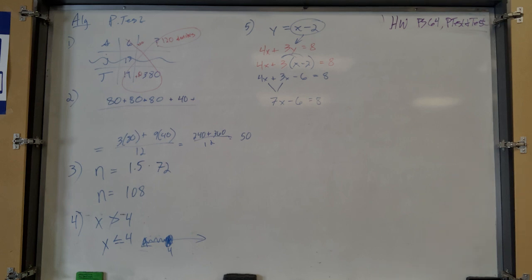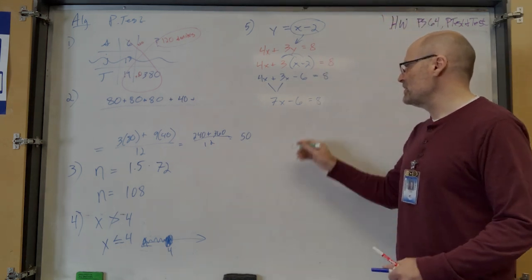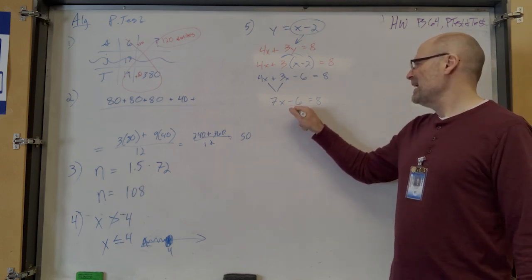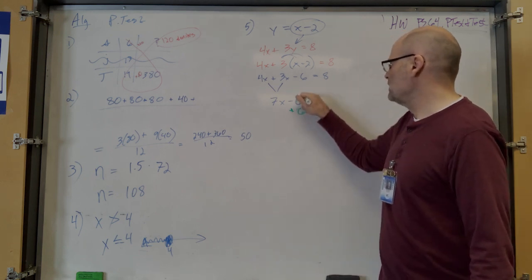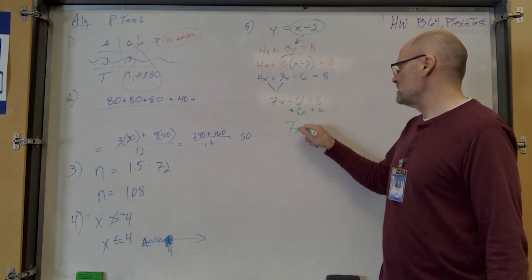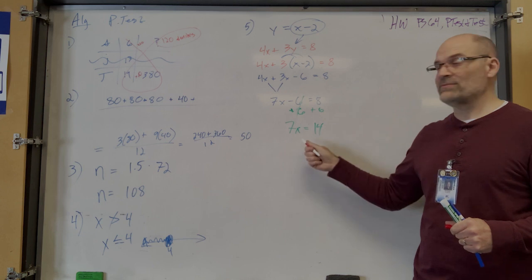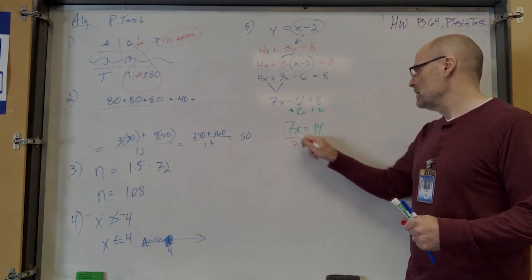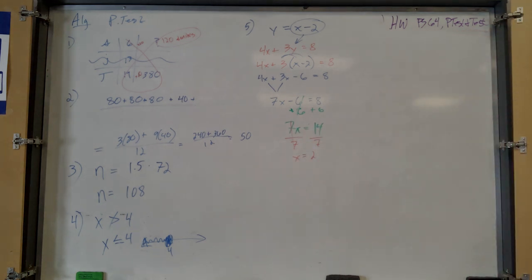Next, get rid of the constant on the variable side. How do you get rid of minus 6? Add 6 to both sides. So 7x equals 14. Then divide by 7 — because 7 is multiplying x — to get x equals 2.